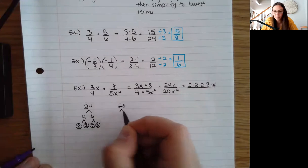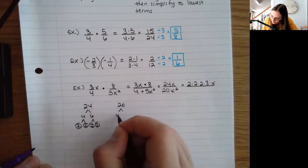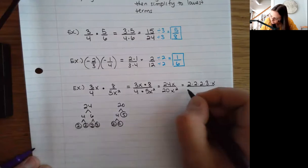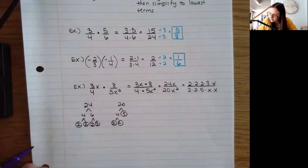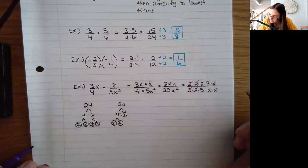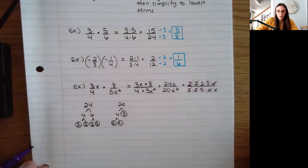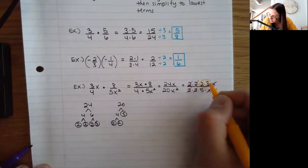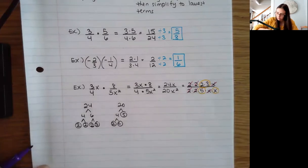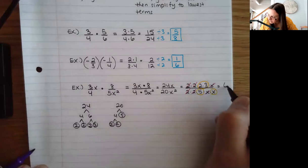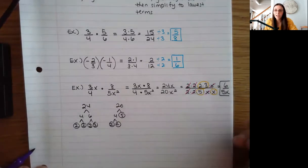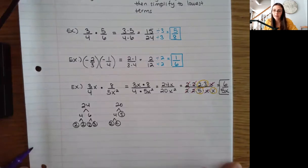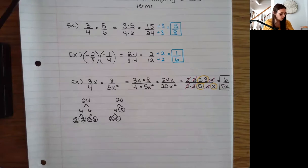For 20, I have 4 times 5, and 4 is 2 times 2. And x squared means I have 2 x's. I cancel: I have a pair of 2s here, another pair of 2s, and I can cancel one x. What's left in the numerator is 2 times 3, and in the denominator 5 times x. So my final answer is 6/5x. Having an improper fraction is totally fine — if the question wants you to convert to a mixed number, you can do that as well.